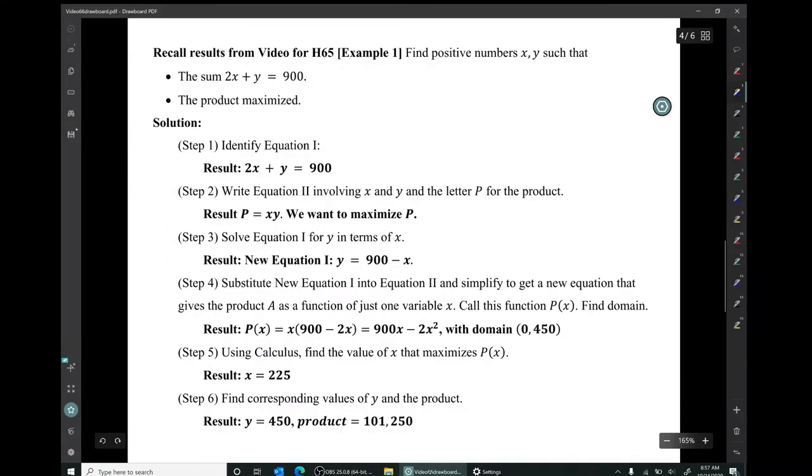So we're trying to find positive numbers x and y, such that this particular sum was 900, and the product was maximized. In that example, we were not given the second equation. We were only given the first equation. So we identified this second equation: p = x times y. We had equation one, that was that particular sum that has a known value.